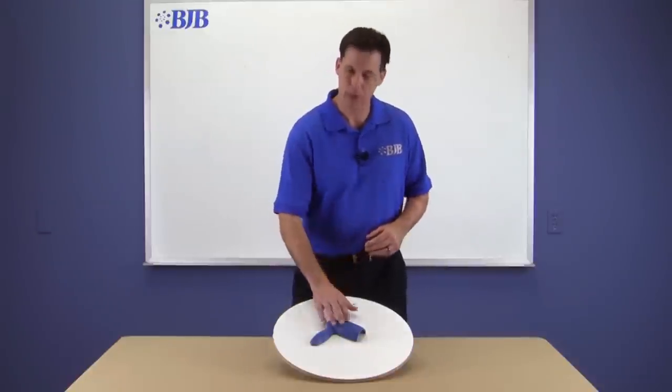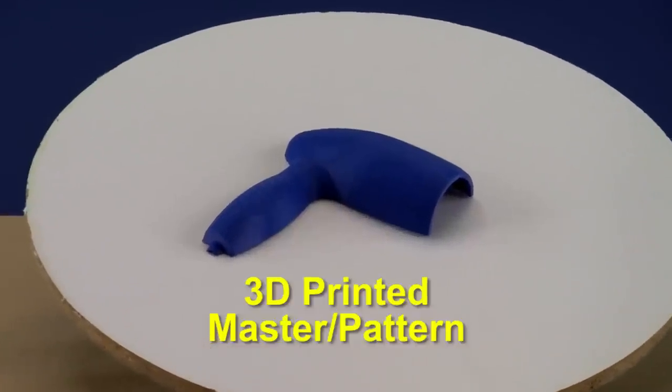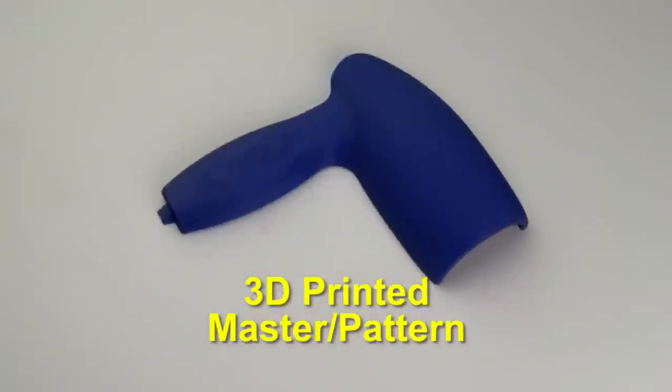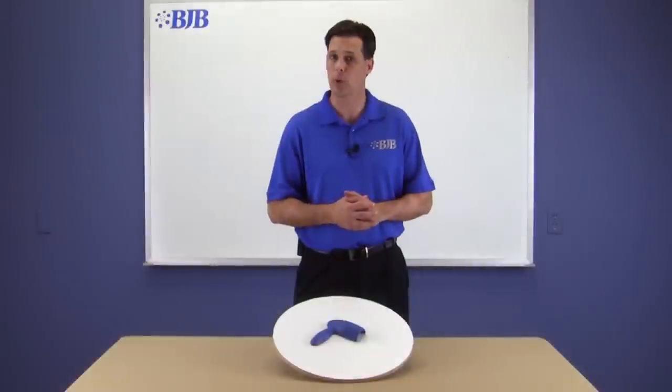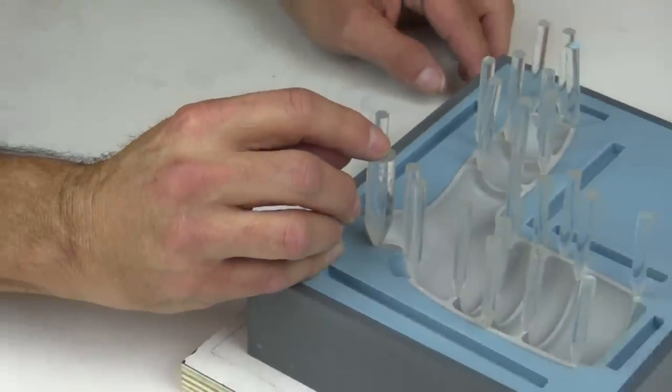We'll be using a thin-walled 3D printed part as our master pattern. Because this part is more complex in its shape and geometry, we address the need for more setup on our splitter board and additional vents to improve material flow through the mold.